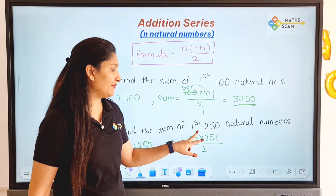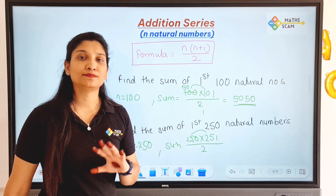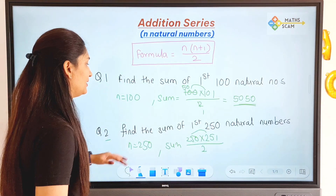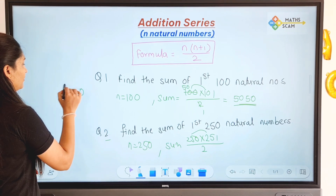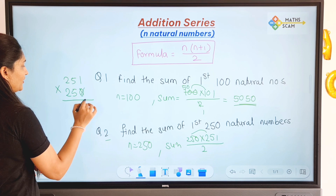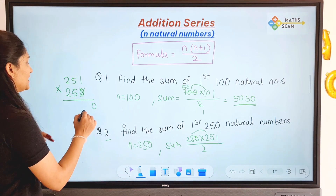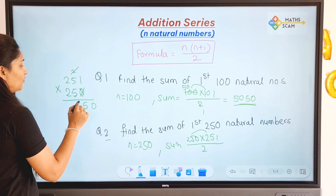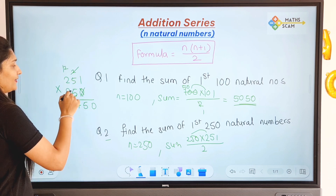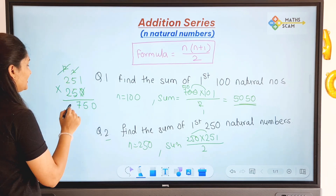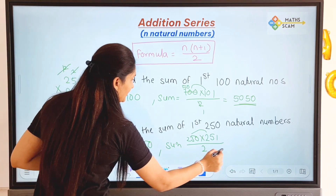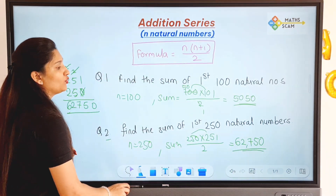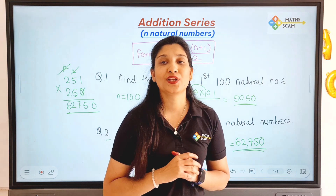Either you can do this multiplication first and then divide by 2, or divide by 2 first. Let's do the multiplication first: 250 into 251. 250 has a factor of 10, so computing 25 into 251: 1 times 25 is 25, carry 2; 5 times 25 is 125 plus 2 is 127, carry 12; 2 times 25 is 50 plus 12 is 62. So 250 into 251 is 62,750. Dividing by 2 gives 31,375 — that is the sum of the first 250 natural numbers without actually doing the addition.